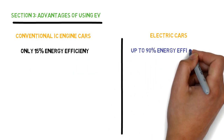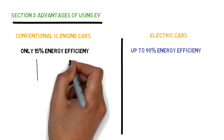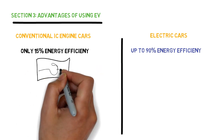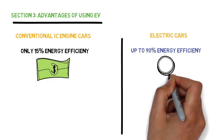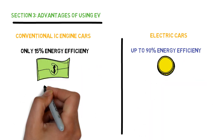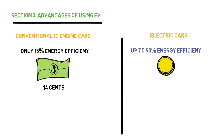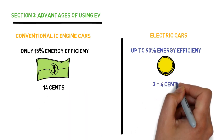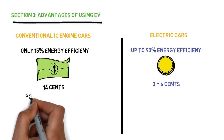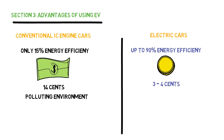Just to put this into perspective, a petrol car normally has an economy of 14 cents per mile. Electric cars, on the other hand, have an economy of 3 to 4 cents per mile. Electric cars are also environmentally friendly.